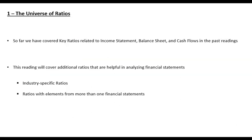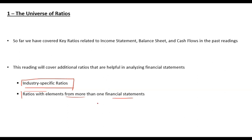Starting with the universe of ratios, there were two types of ratios we hadn't discussed earlier. The first is industry-specific ratios, and the second involves ratios with elements from more than one financial statement. For income statement ratios we used only income statement elements; for balance sheet and cash flow ratios we used only those elements. The ratios using more than one financial statement we hadn't covered yet — we'll do that now.